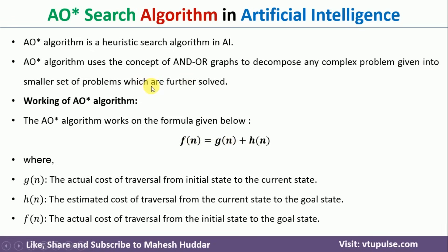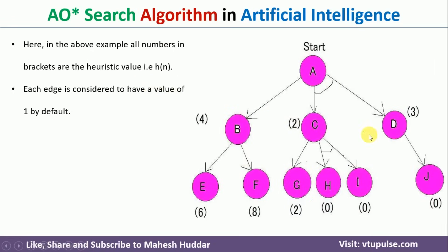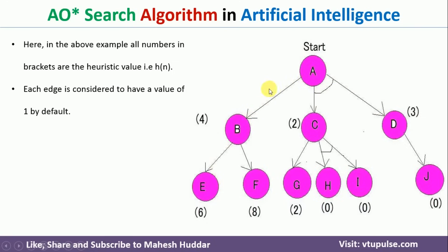To understand this equation and the AO* search algorithm, we will take one example. A is the start state, and we have a complex graph here. We will divide this into small groups and try to achieve the goal. The numbers written on top of nodes — for example, 4 on B — indicate the heuristic value, the probable cost to reach from that node to the goal. Similarly, 3 on D means the probable cost from D to the goal is 3. Where no cost is written on an edge, by default it is assumed as 1 in the AO* algorithm. So from A to B it is 1, B to E it is 1, and so on.